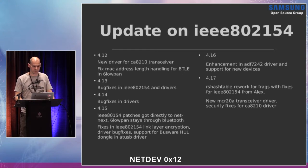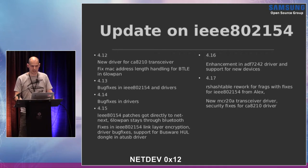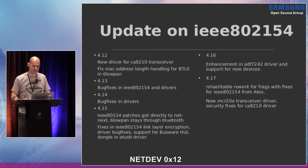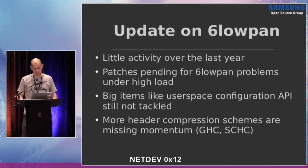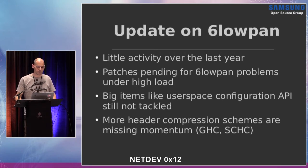In 4.16 we got a few more enhancements for the AT86 driver and support for new devices — new chips produced based on the old design. In 4.17 we hit a problem when Eric did the hash table rework for fragmentation in IPv6. When his patches landed, it completely broke how we did 6LoWPAN adaptation to our subsystem. We'll come to that later. Luckily, Alex found a fix in time so it never made it into a release. We also got another transceiver driver for the MCR20A transceiver, plus security fixes for one of the drivers.